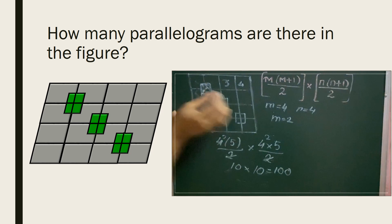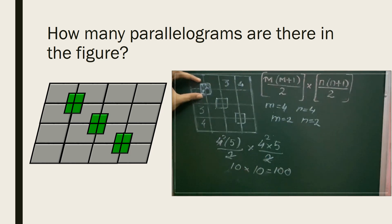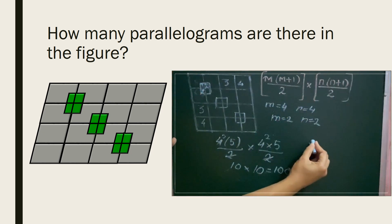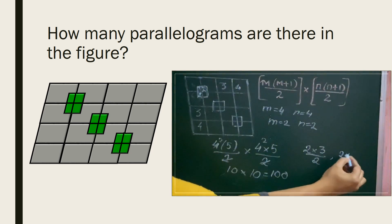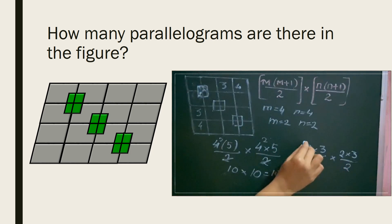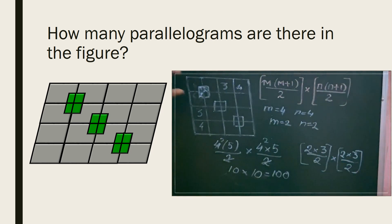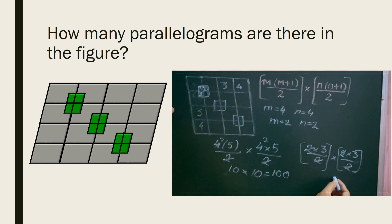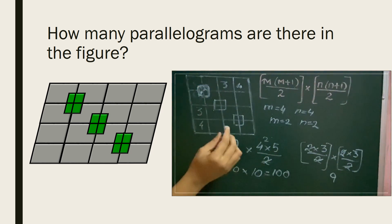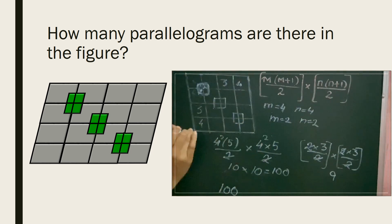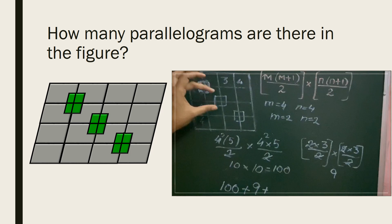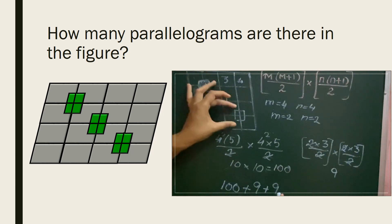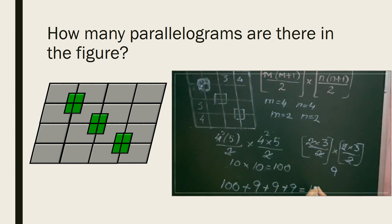Let's count the parallelograms for this 2 by 2 section. Substituting into the formula with m=2 and n=2: 2 into (2+1=3) divided by 2, and the same for n. So it's 3 into 3, which is 9. There are 9 parallelograms in each small figure. We already have 100 parallelograms in the whole figure. Adding the three small parts — 9 plus 9 plus 9 — gives a total of 127 parallelograms in this figure.